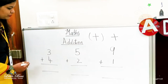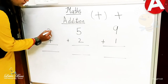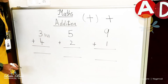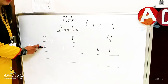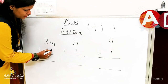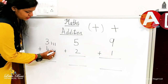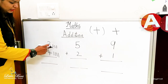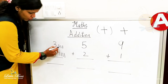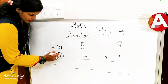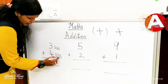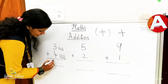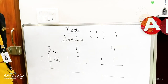For three plus four: we draw three lines — one, two, three — then four lines — one, two, three, four. We strike through and count all the lines: one, two, three, four, five, six, seven. Three plus four is equal to seven.